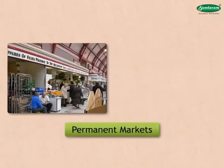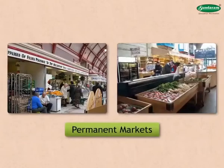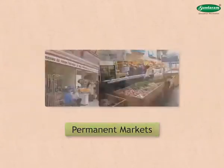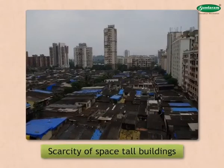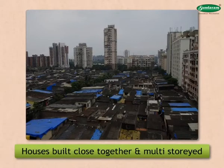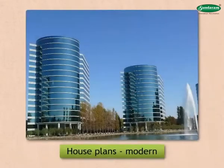There are permanent and varied types of markets. Due to scarcity of space, houses are close together and are multi-storied. Open spaces around the houses are very limited, and house plans are modern.